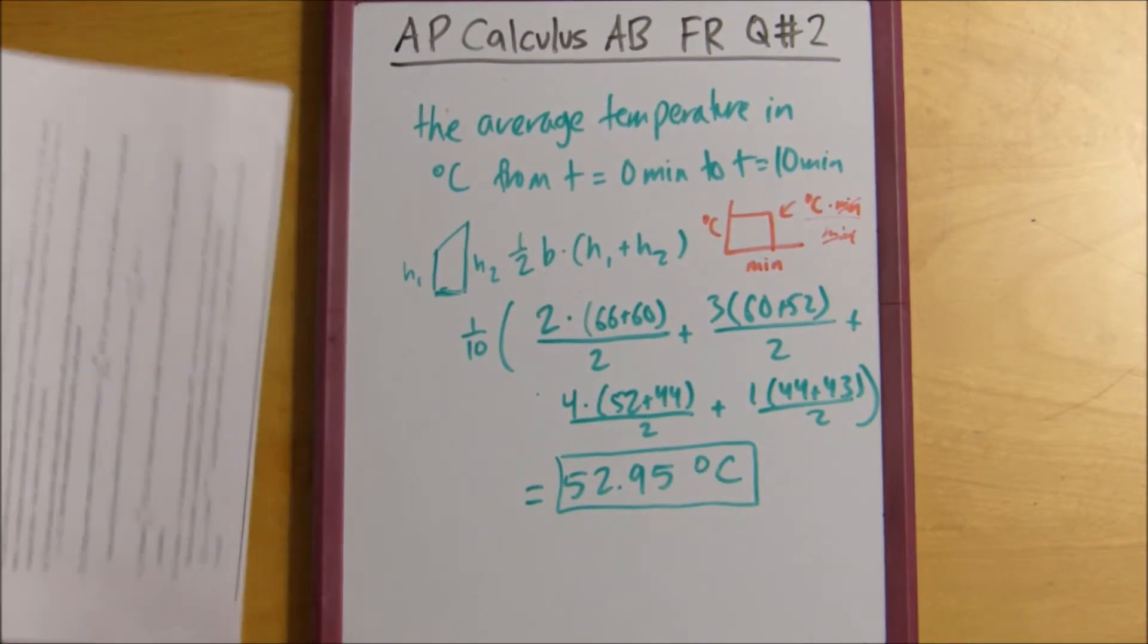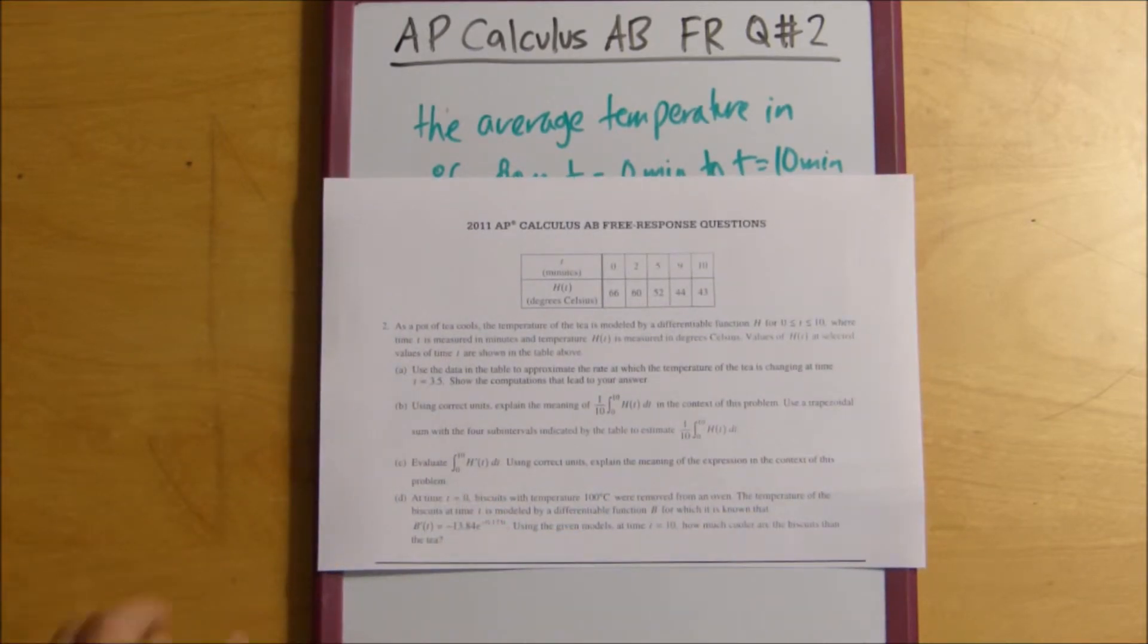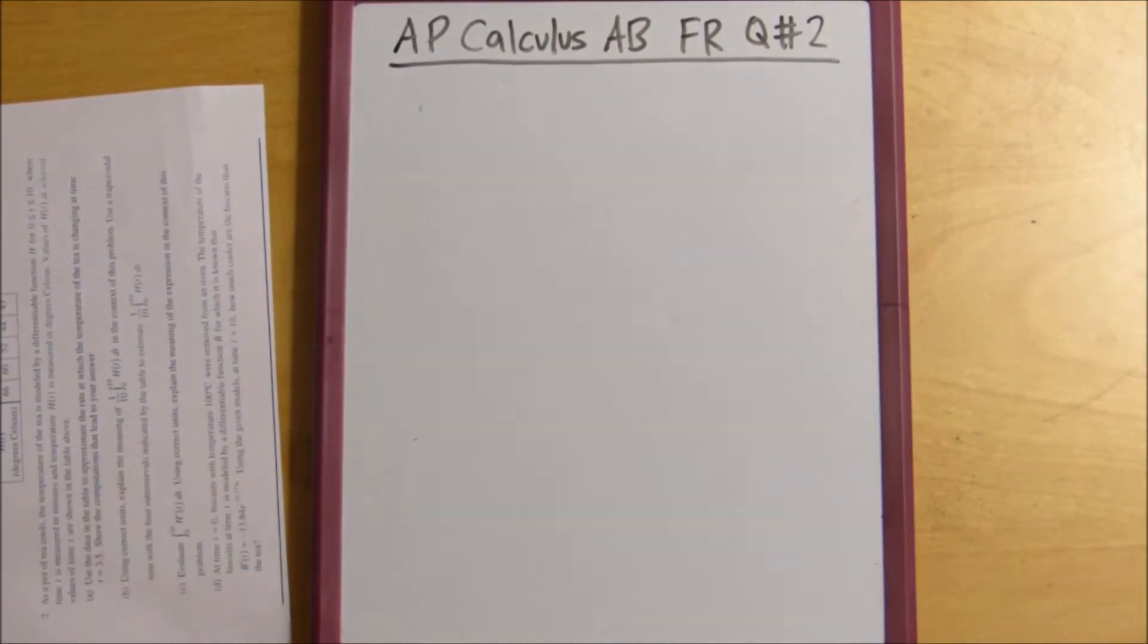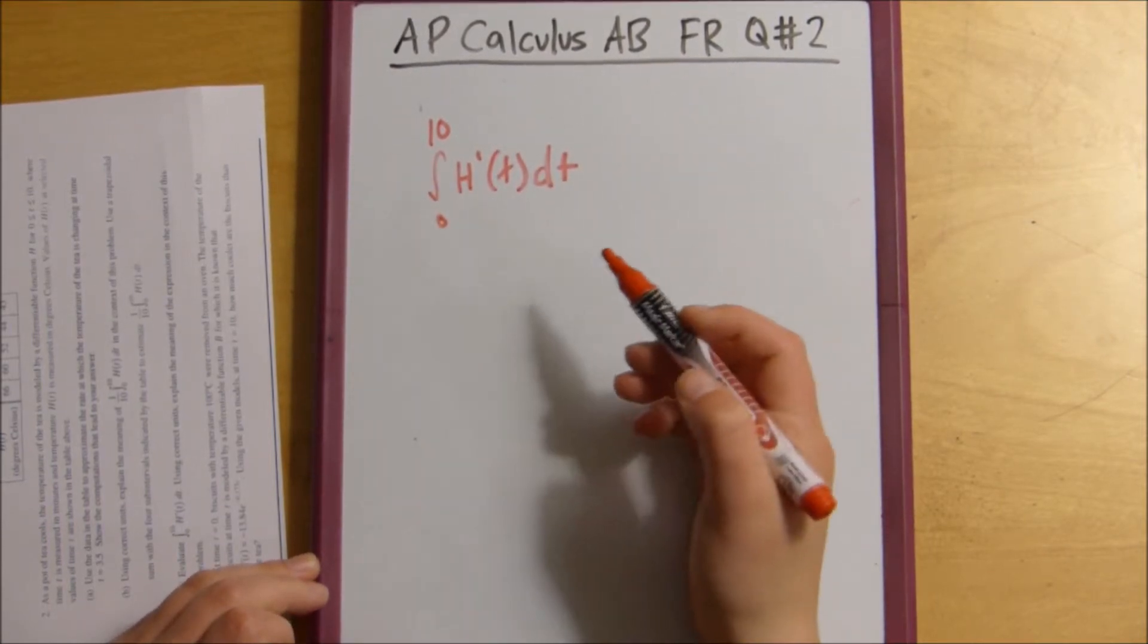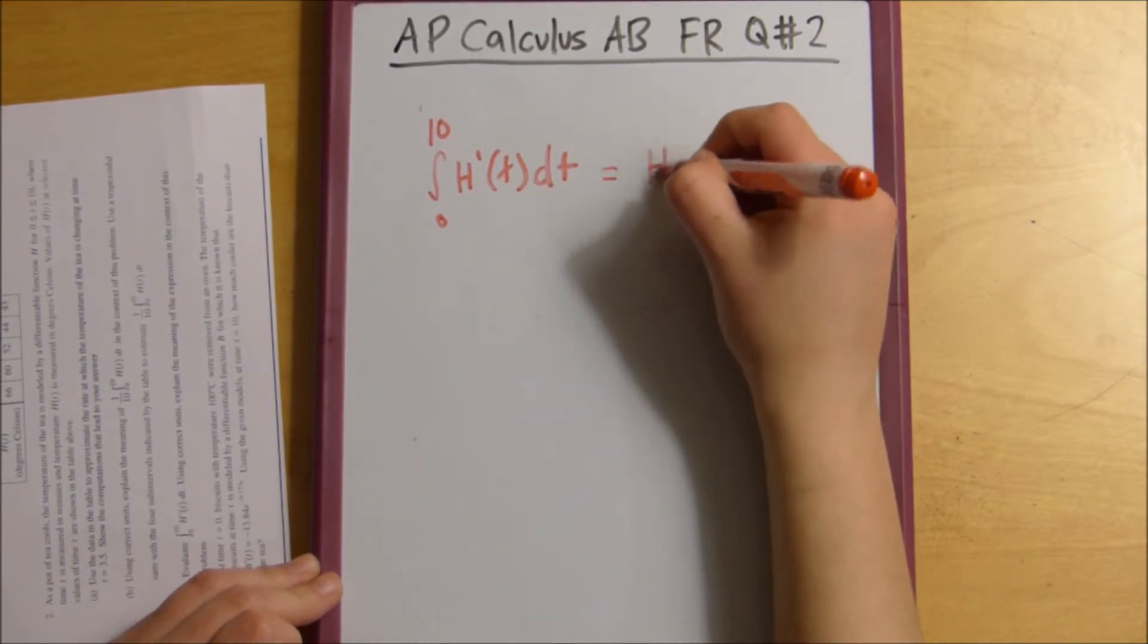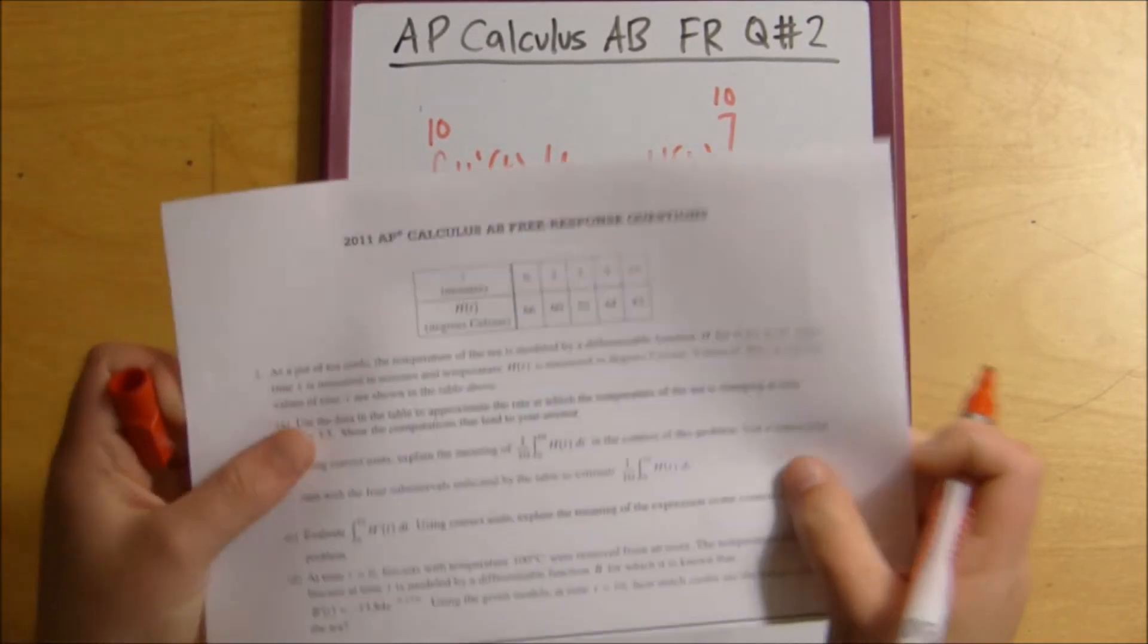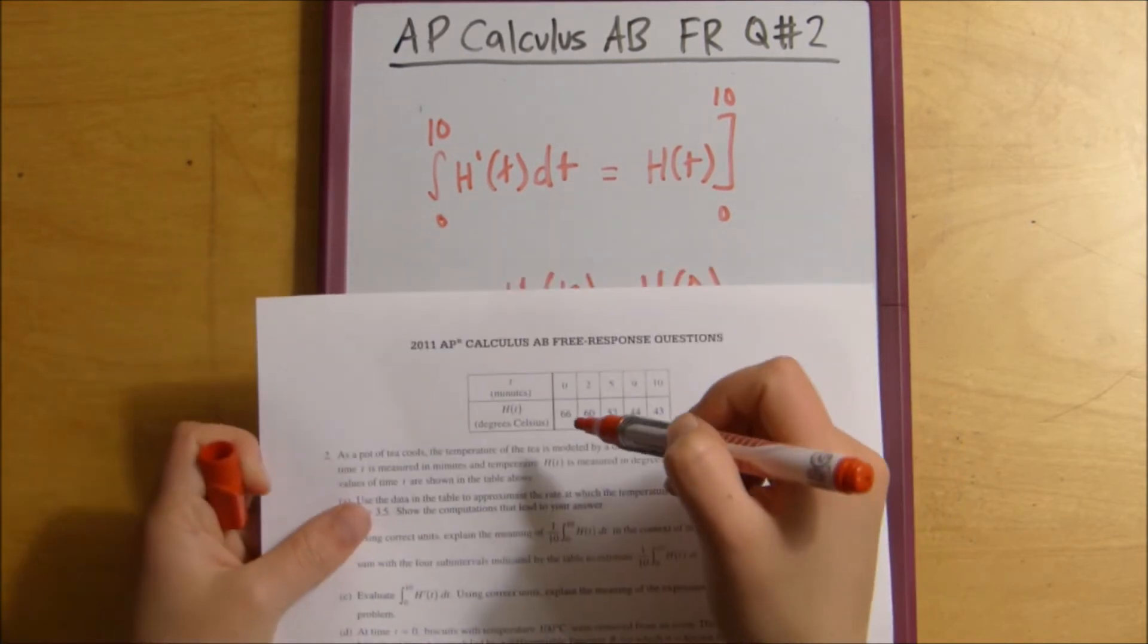And then, the third part of this question is to evaluate the integral from 0 to 10 of h of t. So, using my knowledge of anti-derivatives, you know that if you were to find the anti-derivative of h prime of t, it would be h of t. And this is from 0 to 10, so this is all the same thing as h of 10 minus h of 0. And then, since we have our nifty little data table here, we can see that h of 10 is 43, and then h of 0 is 66.